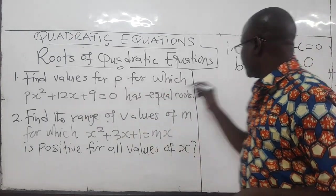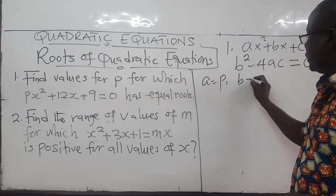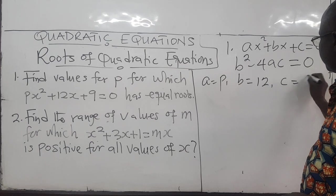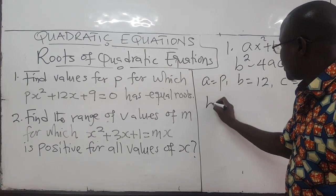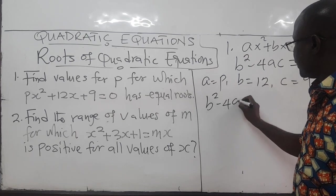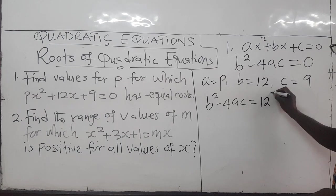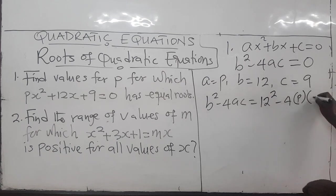So from the quadratic equation, our A there is P, B is 12, and then C is equal to 9. Which means that B squared minus 4AC is equal to 12 squared minus 4AC is P, C is 9. This has to be equal to zero.